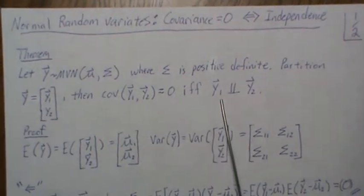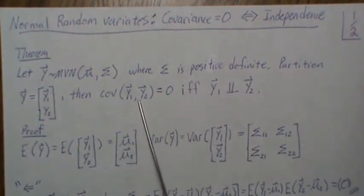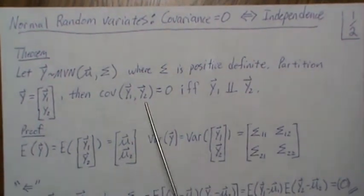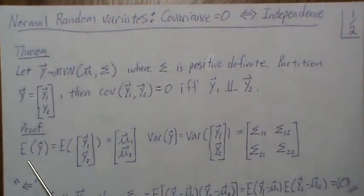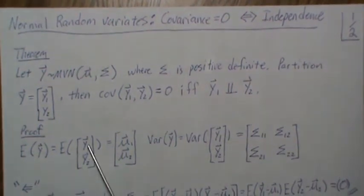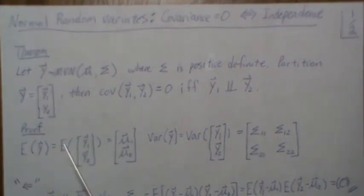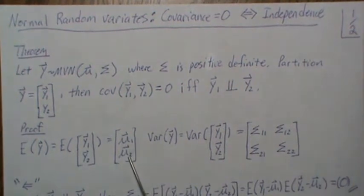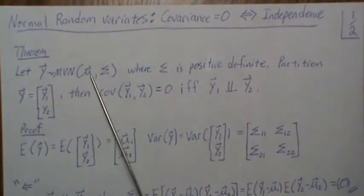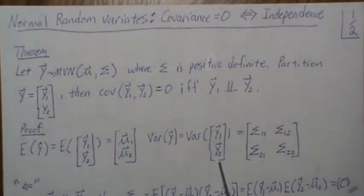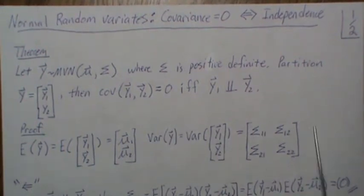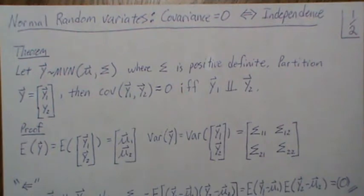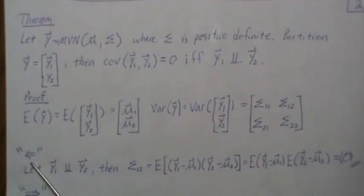...if and only if y1 and y2 are independent. 'If and only if' means both directions must be proved. The expected value of y, when partitioned, gives us mu1 and mu2. The variance-covariance matrix sigma can be written in partitioned form with four components — sigma and this partitioned matrix are the same thing, just broken into parts.